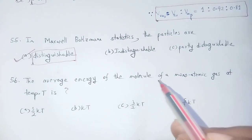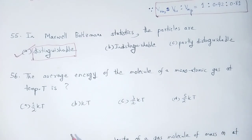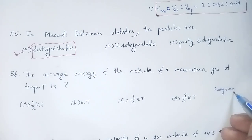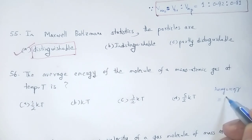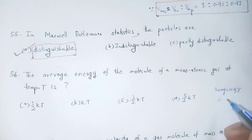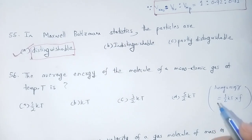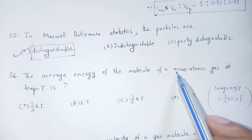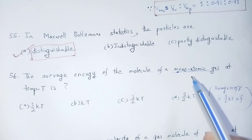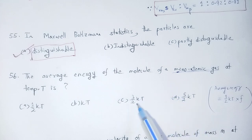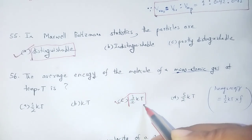Question 56: The average energy of a molecule of a monoatomic gas at temperature T. According to the law of equipartition of energy, the energy associated with each degree of freedom is (1/2)kT. A monoatomic gas has 3 degrees of freedom. So total average energy = 3 × (1/2)kT = (3/2)kT. Option number A: (3/2)kT.